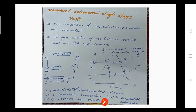Process 4 to 1 is the isenthalpic expansion, which takes place with the help of the throttling device. In this process, entropy is not constant but enthalpy is constant. The 4 to 1 process is indicated by a dotted line because it is a highly irreversible process. Irreversible processes are indicated by dotted lines because we do not know the exact path — we know only the end points.